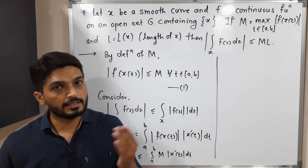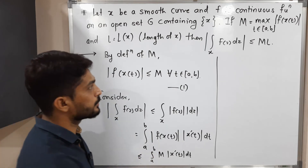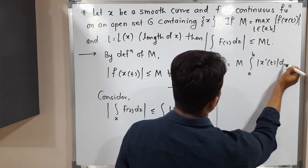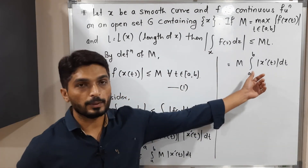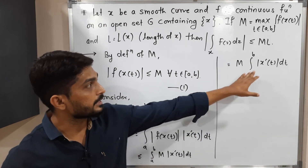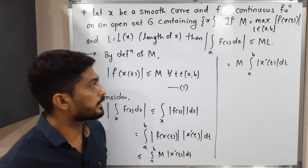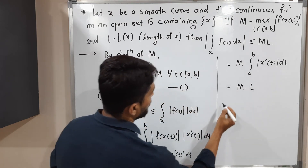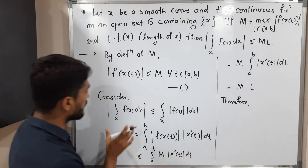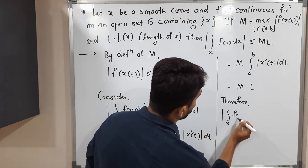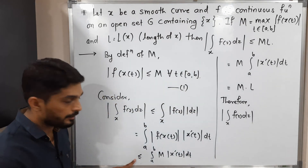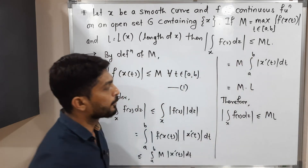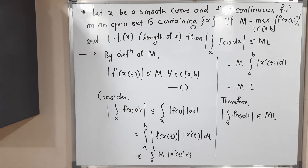Since m is a constant, we can take it outside the integration, giving m times the integration from a to b of mod x dash of t dt. This integration is nothing but the length of curve x, already denoted as capital l. Therefore, mod of the integration over x of f of z dz is less than or equal to m into l. In this way we have proved this inequality. Make a screenshot of it. Thank you, bye bye.